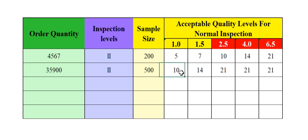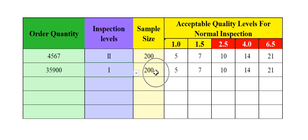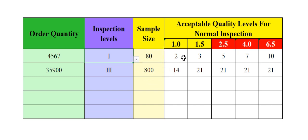If you have this tool, you can find the data automatically. If you follow inspection level 1, the sample size is automatically changed. And according to this sample size, the AQL level also changes. If the inspection level is 3, the sample size is automatically changed and the acceptable quality level also changes.